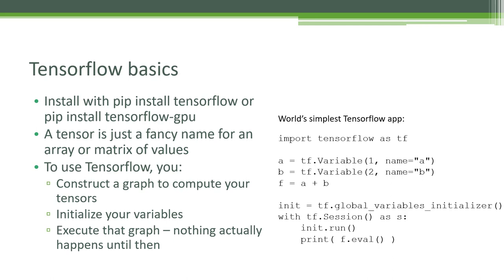So what is TensorFlow all about? What is a tensor anyway? Unfortunately, this is another example of fancy, pretentious terminology that people use to make themselves look smart. At the end of the day, a tensor is just a fancy name for an array or a matrix of values — a structured collection of numbers. That's it. That's all a tensor is.